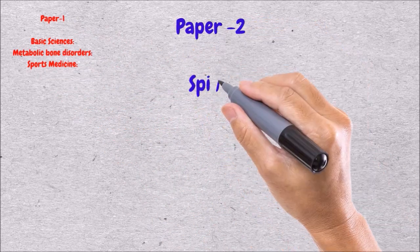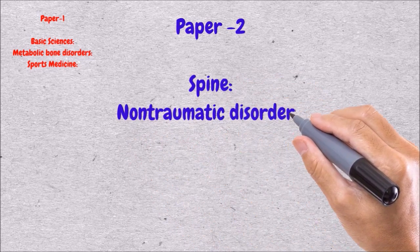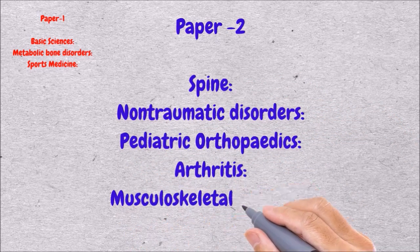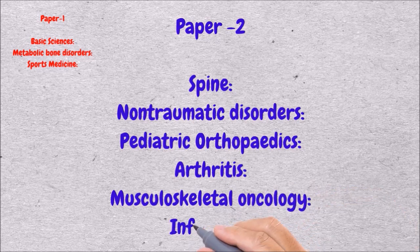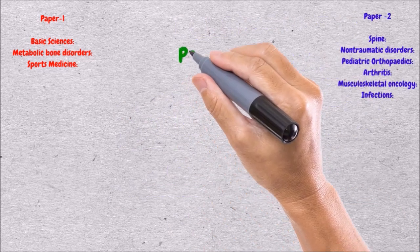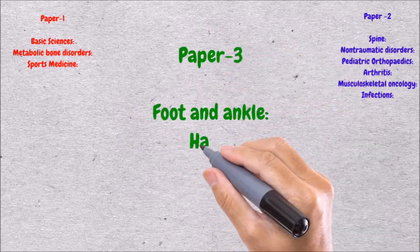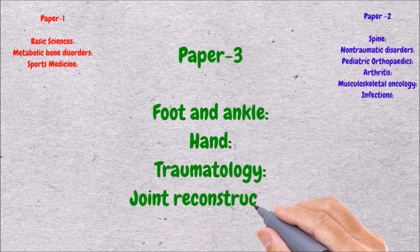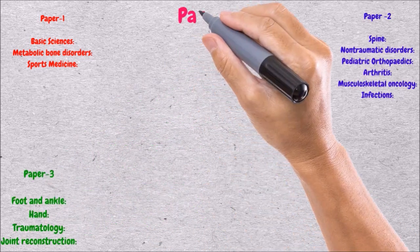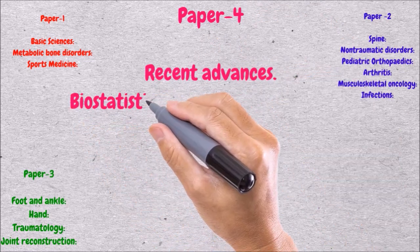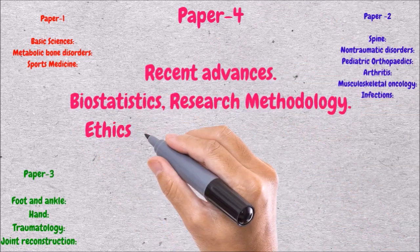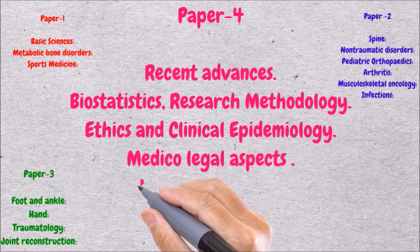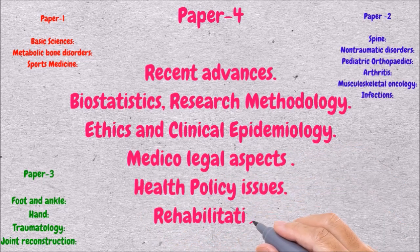Paper 2 will contain spine, non-traumatic disorders, paediatric orthopaedics, arthritis, tumours, and infections. Paper 3 will contain foot and ankle, hand, trauma, and orthoplasty. And lastly, Paper 4 will contain recent advances, biostatistics, research methodology, ethics, legal aspects, health policies, and rehabilitation.